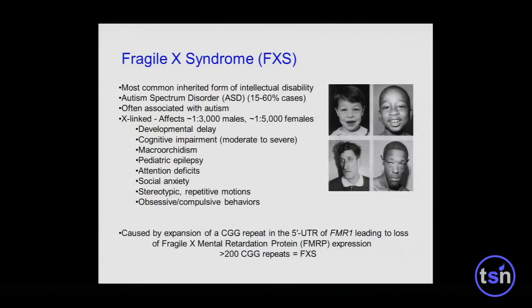Fragile X syndrome is the most commonly inherited form of intellectual disability. It's also very commonly associated with autism. It's caused by an expansion of a CGG repeat in the 5-prime UTR of the FMR1 gene, leading to loss of the Fragile X mental retardation protein. Generally, expansion to greater than 200 repeats of this trinucleotide repeat is sufficient for diagnosis of Fragile X syndrome.